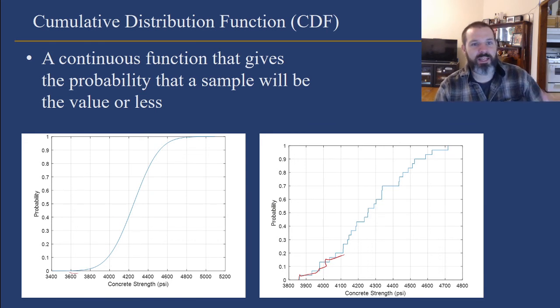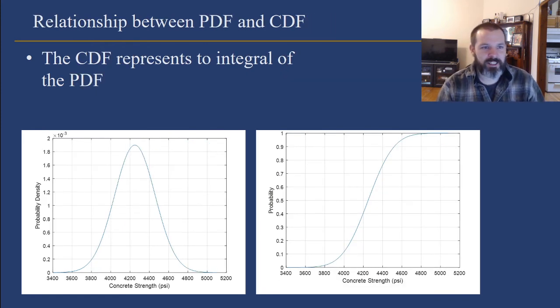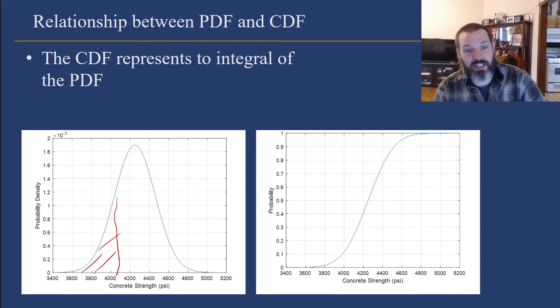For both the PDF and the CDF, there are numerical equivalents in the histogram or the empirical distribution function. Finally, the cumulative distribution function represents the area underneath the probability density function moving from left to right. As you well know, the area under a curve is the integral. So if you have the CDF, you can integrate the CDF to get the PDF.